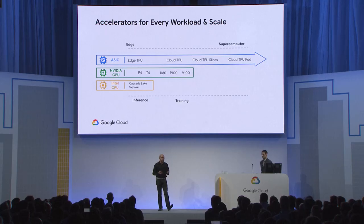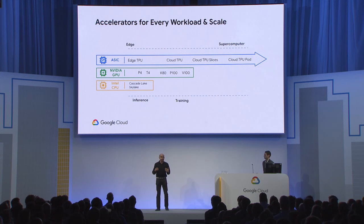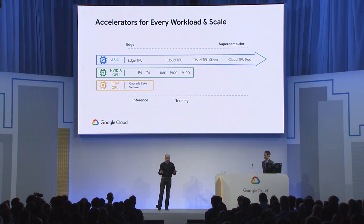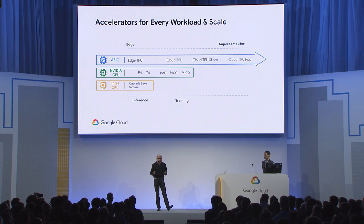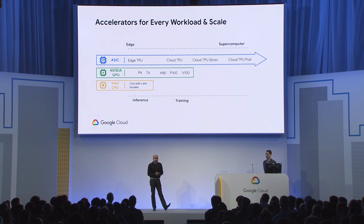How do you decide which AI infrastructure to choose? The most important thing is the range of options and the supporting software stack. GCP offers a wide selection of accelerators for every workload and scale. CPUs are very effective for low-cost, low-throughput inference and traditional ML workloads. As you scale up, GPUs with their parallel architecture are super effective at machine learning workloads.